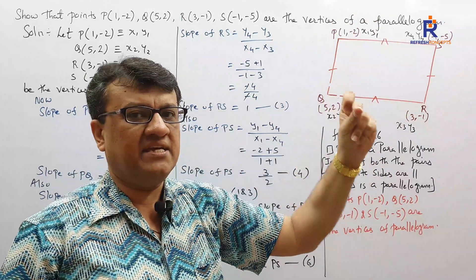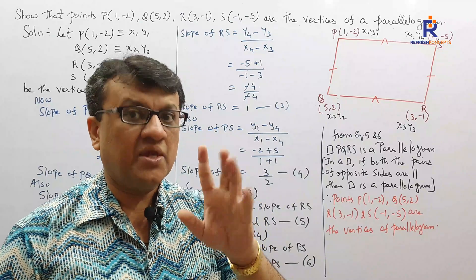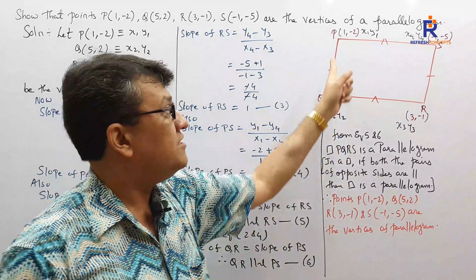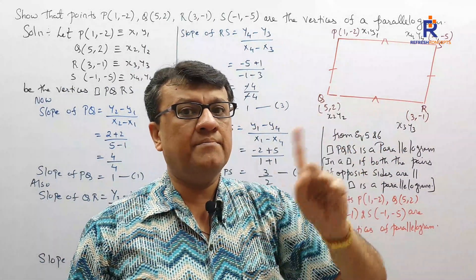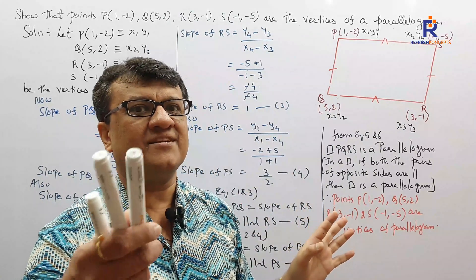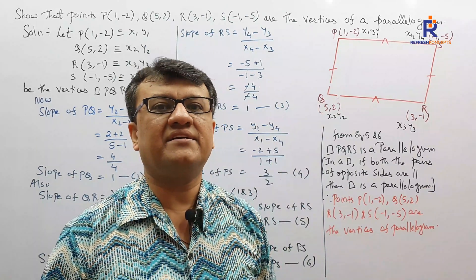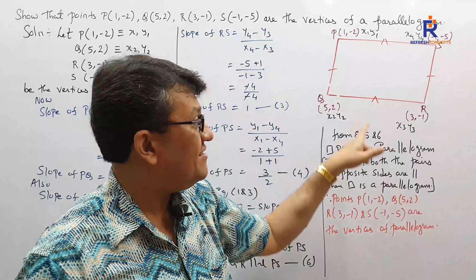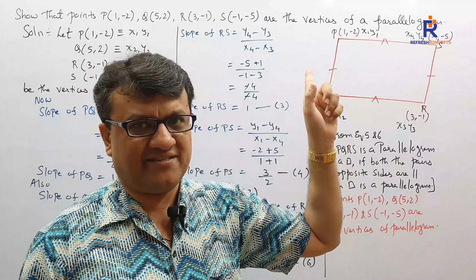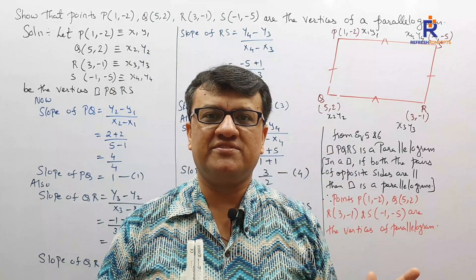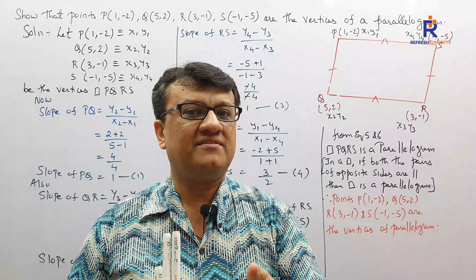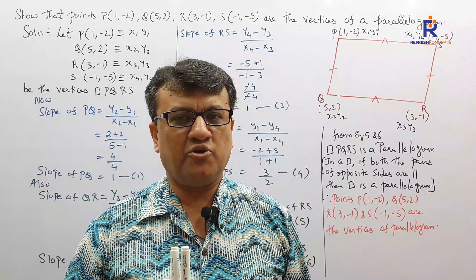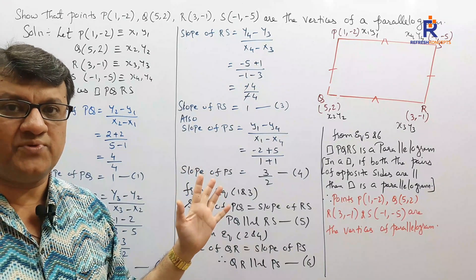So in a parallelogram, if one angle is 90°, it turns into a rectangle. We can prove it as a parallelogram either by the slope method — which we have done — or by the distance formula. These kinds of sums require good knowledge of definitions and properties. I hope you have understood the many cases explained through this sum.